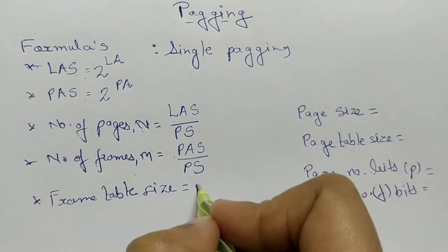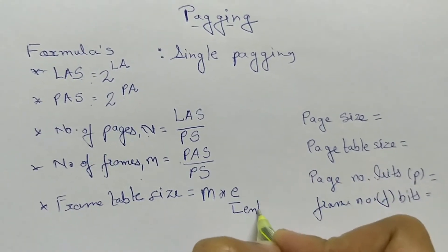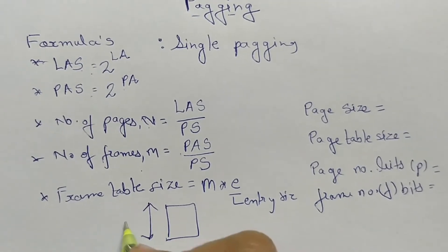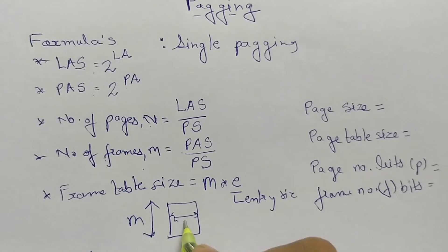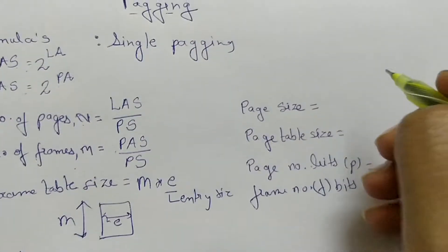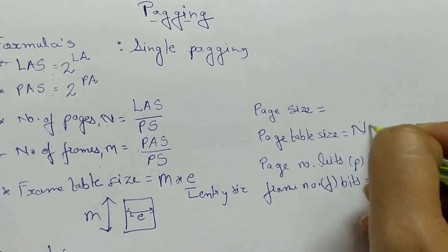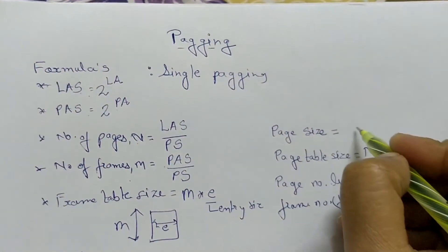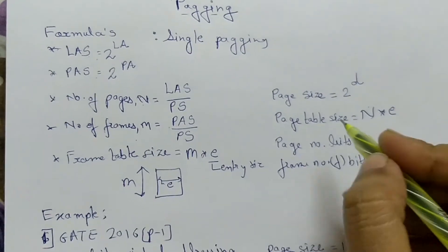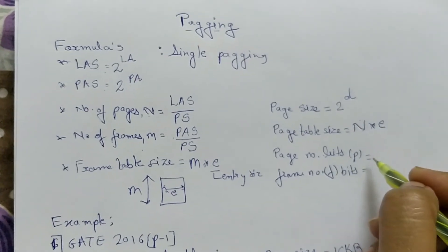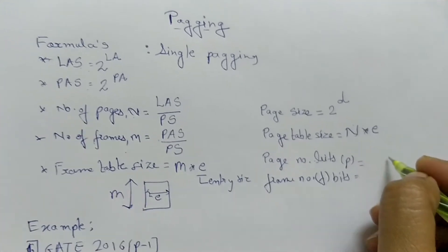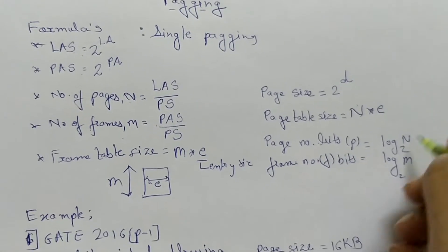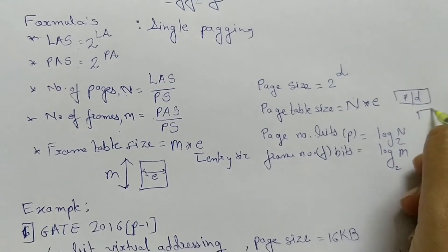Frame table size is given by M into E, where E is the entry size — M is the number of entries and small e is the size of each entry. Similarly, page table size is given by N into E. Page size is given by 2 to the power D, where D is the offset. Page number bits, small p, is given by log base 2 of N, and frame number bits is given by log base 2 of M.